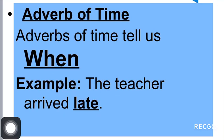The next type is adverb of time. Adverb of time talks about when. For example: 'The teacher arrived late.' Here 'arrived' is the verb and 'late' is the adverb of time, talking about when the action occurred.